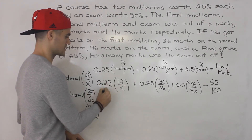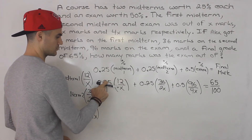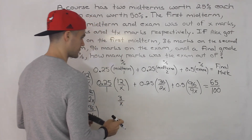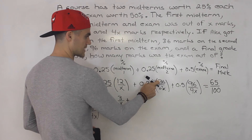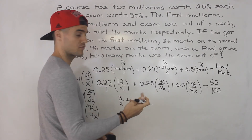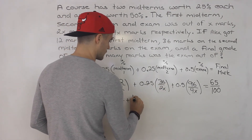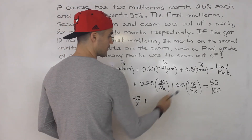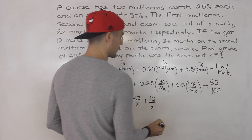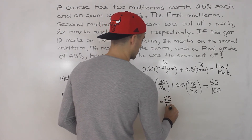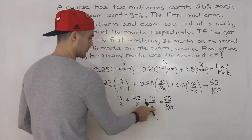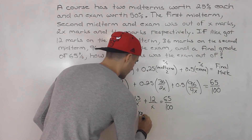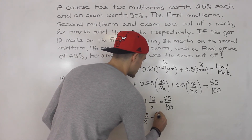Now let's simplify. Multiplying 0.25 by 12 over X gives 3 over X. Then 0.25 times 36 is 9, and 9 divided by 2 is 4.5 — so that term becomes 4.5 over X. Then 0.5 times 96 is 48, and 48 divided by 4 is 12 — giving 12 over X. Since all terms share denominator X, we add the numerators: 3 plus 4.5 plus 12 equals 19.5 over X, all equal to 65 over 100.